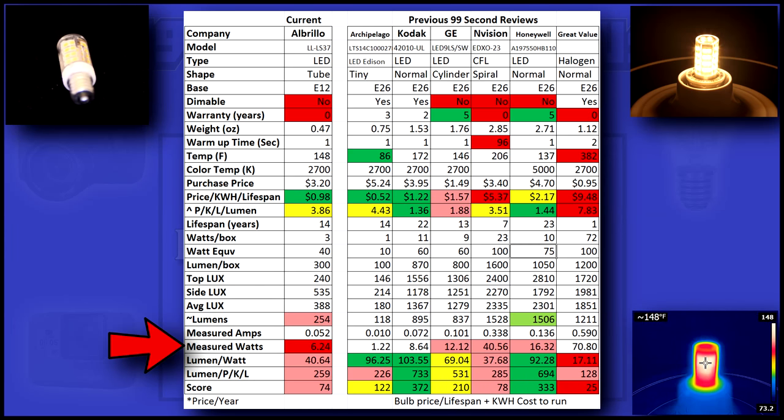One of the biggest disappointments of this bulb is that it uses over twice the advertised watts and only produced 85% of the advertised lumens.